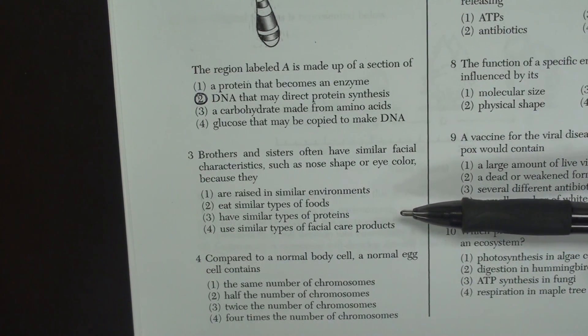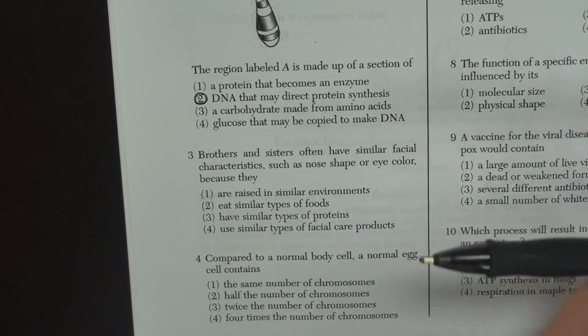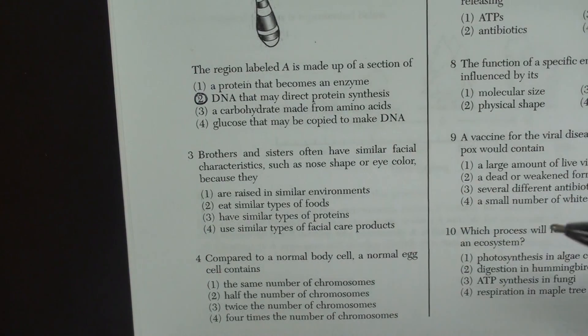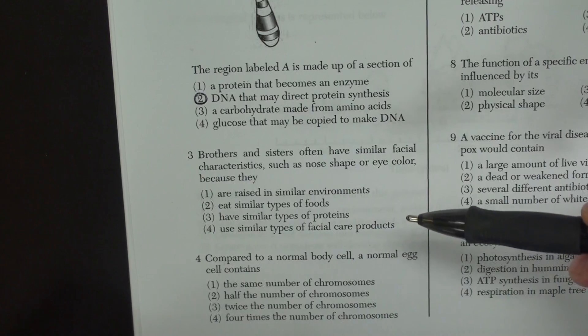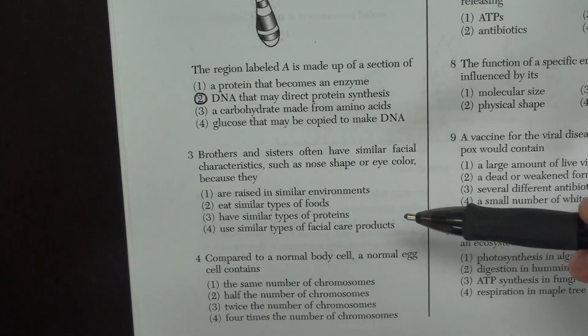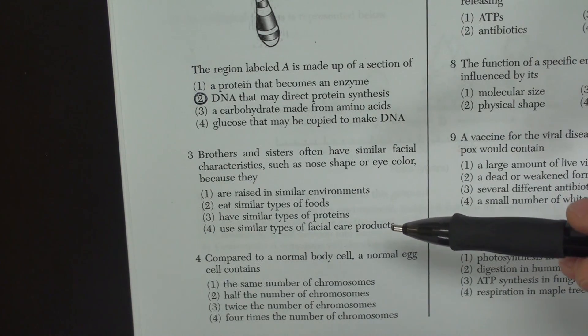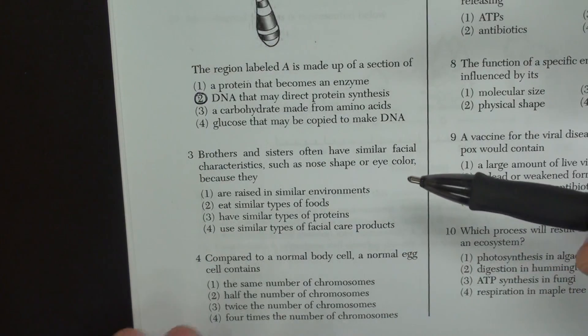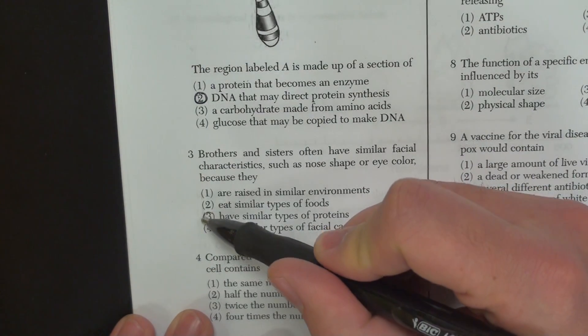It's a code that tells your body what to do. So once you know that, you know that the DNA codes for the proteins that your body makes, so if they have similar DNA because they have the same parents, then their bodies are going to code for the same types of proteins. So that's why this question is number three.